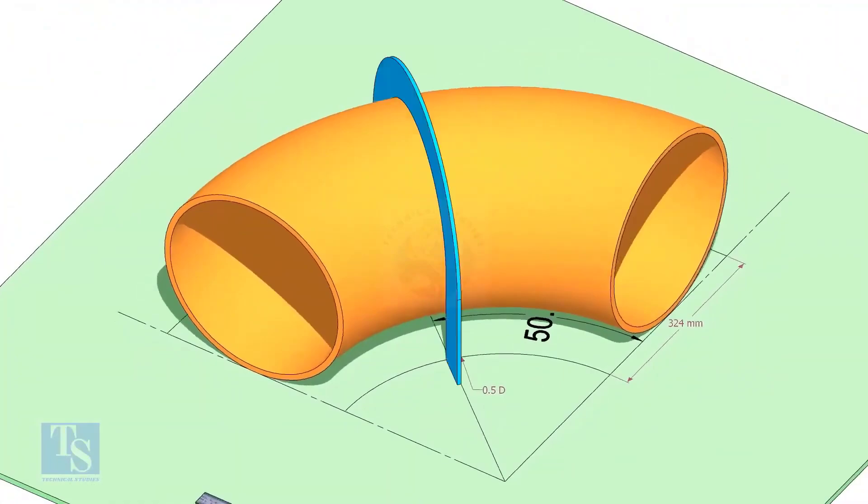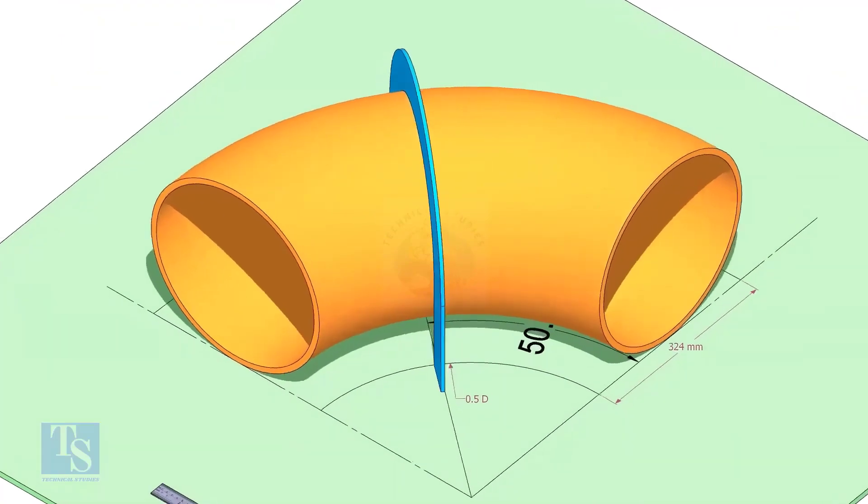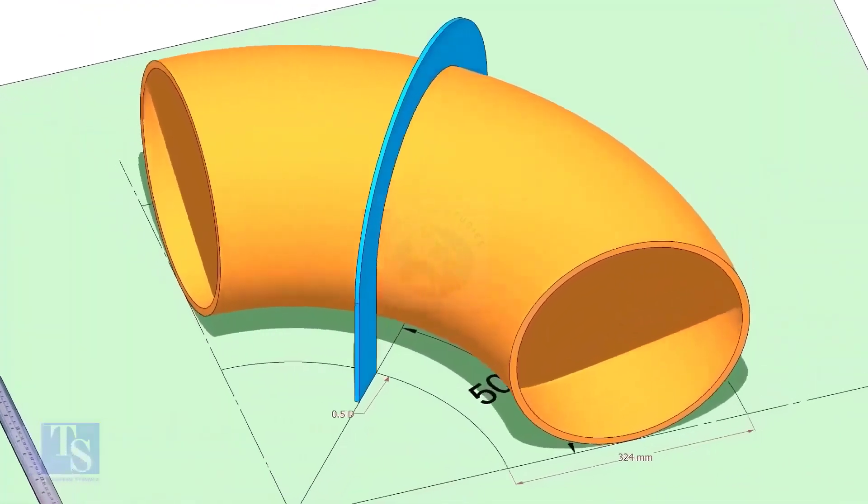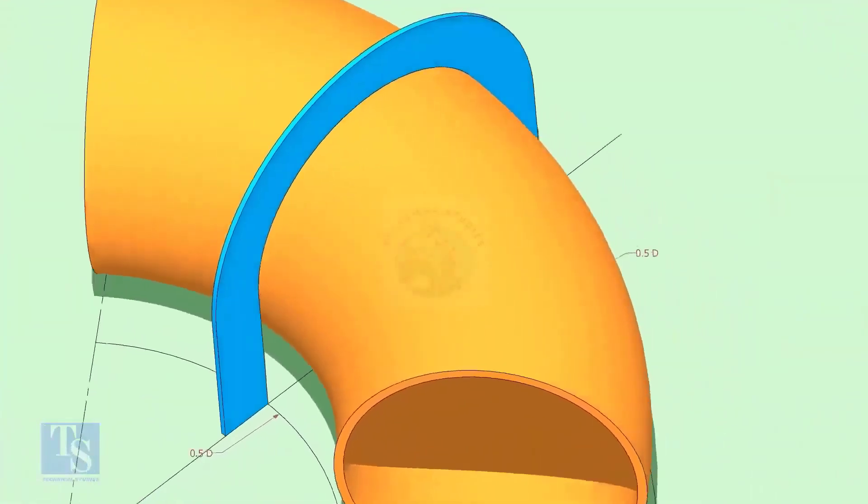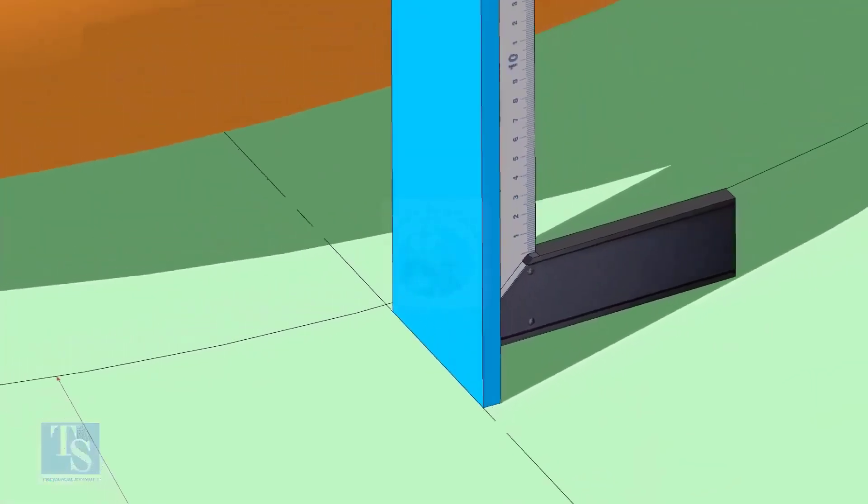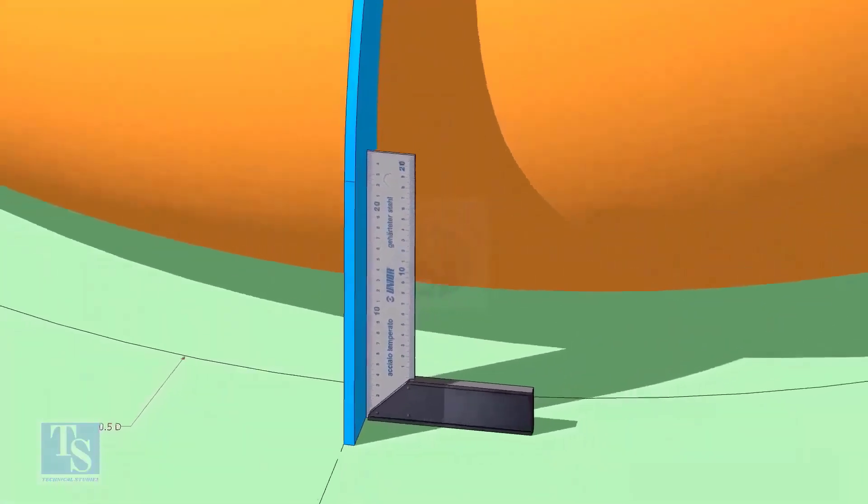Put the half radius plate on the elbow as shown, make sure it sits on the degree line. Make the squareness.